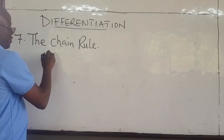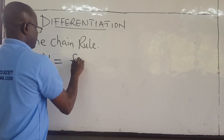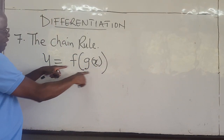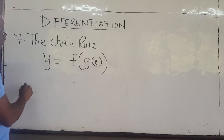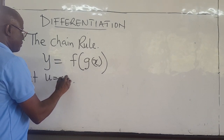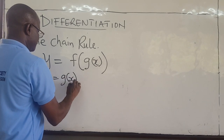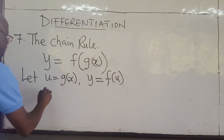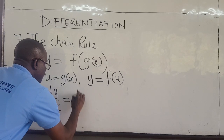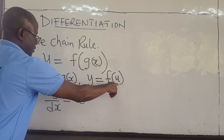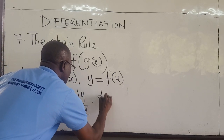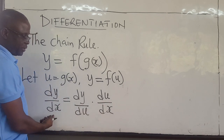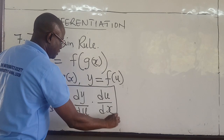So what does the chain rule say? The chain rule says: suppose that y is equal to the function f, but f has a function g of x in it — a function of a function. How do you find dy/dx, the derivative of y? The chain rule says: let u, which is some variable, be equal to the inner function g of x. This implies that the original function now becomes f of u. To find dy/dx, the chain rule says dy/dx will be equal to dy/du multiplied by du/dx. The u cancels out and you get dy/dx, which is what you need. This is basically the chain rule of differentiation.